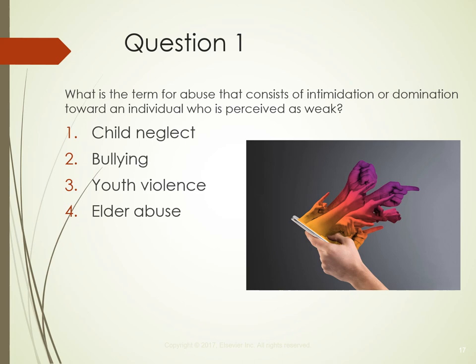Quiz question: What is the term for abuse that consists of intimidation or domination toward an individual who is perceived as weak? The options are: 1. Child neglect, 2. Bullying, 3. Youth violence, 4. Elder abuse. The correct answer is 2 — Bullying. Bullying is a form of abuse, and bullying tactics can be physical, verbal, or emotional, often through social and cyberbullying approaches.